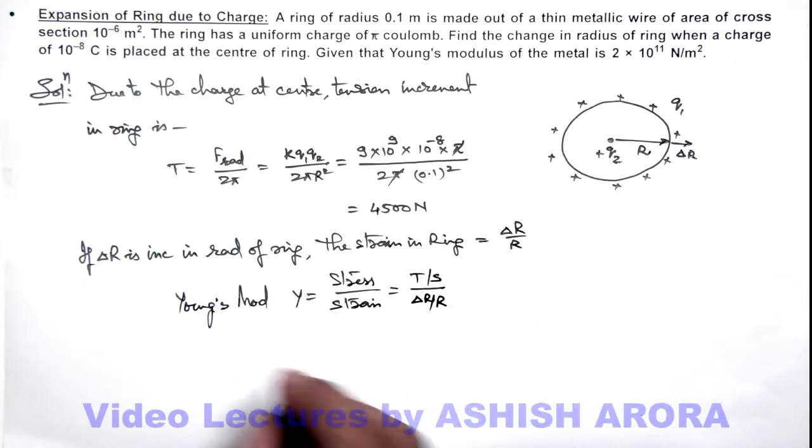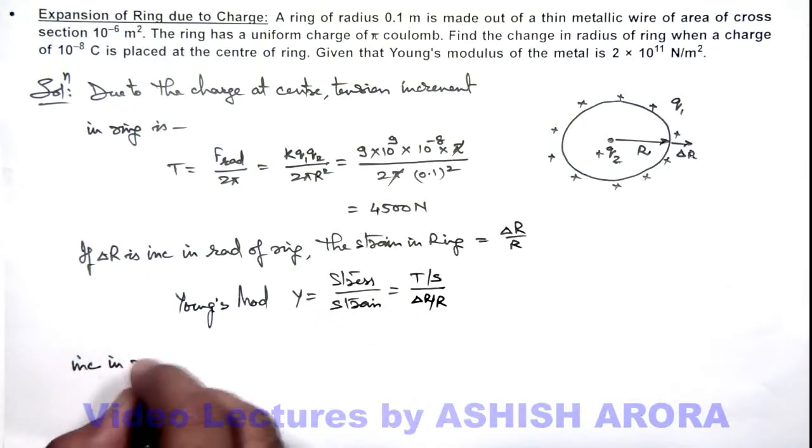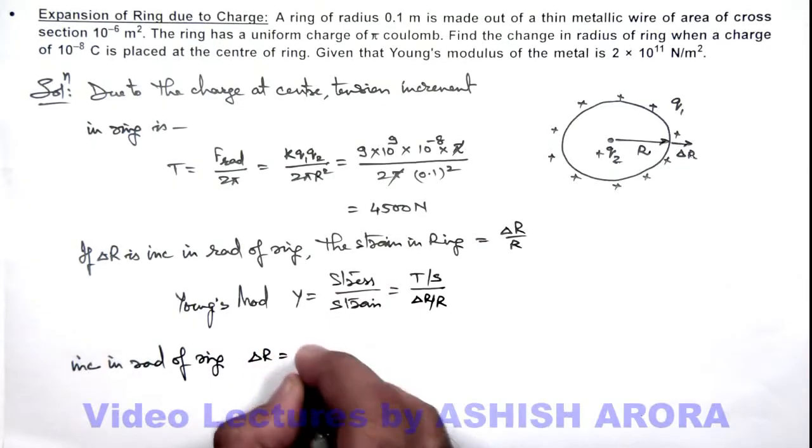Simplifying this expression, I'm getting the increase in radius of ring as Δr, which is equal to T times r by Y times S.